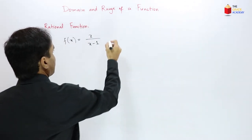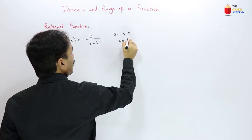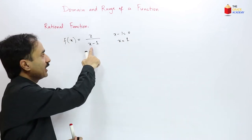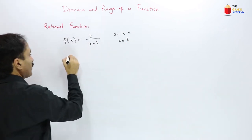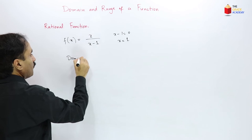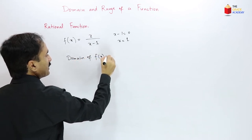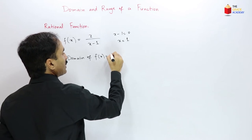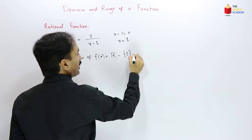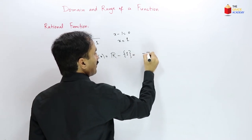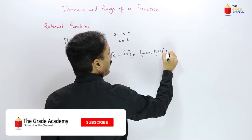So the domain of f(x) = x/(x−1) is the set of all real numbers except 1. In interval notation: (−∞, 1) union (1, +∞).